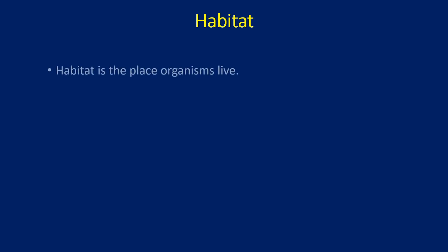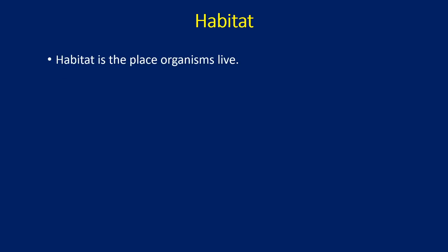When we talk about ecosystem, the first point which comes into mind is the habitat. Habitat can be simply defined as the place where an organism lives — that is the simplest definition of a habitat. Based on the habitat characteristics, they are categorized into four different categories.